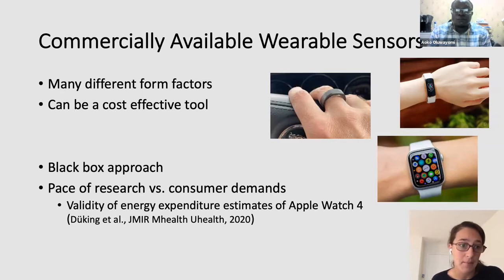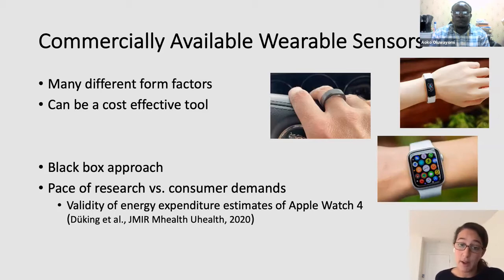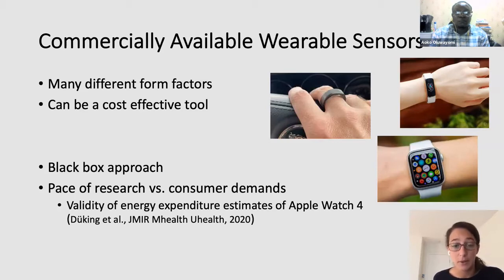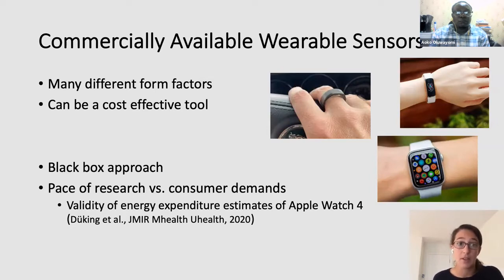For example, a paper cited here from 2020 validated the Apple Watch 4, and by 2021 Apple was already releasing the Apple Watch 7. So these are things you need to consider — not deal breakers, but factors to keep in mind if you're going with a commercially available wearable sensor.